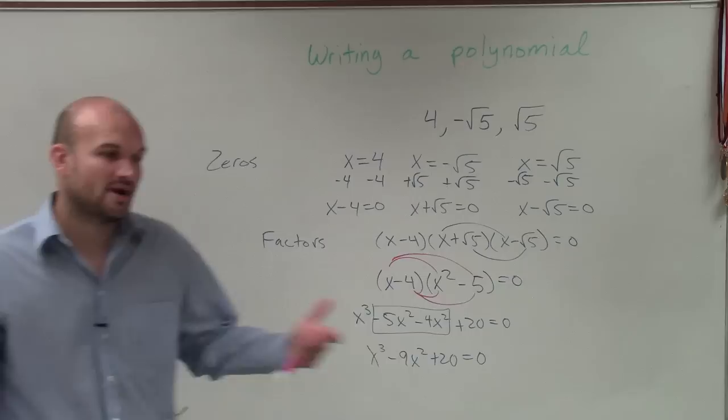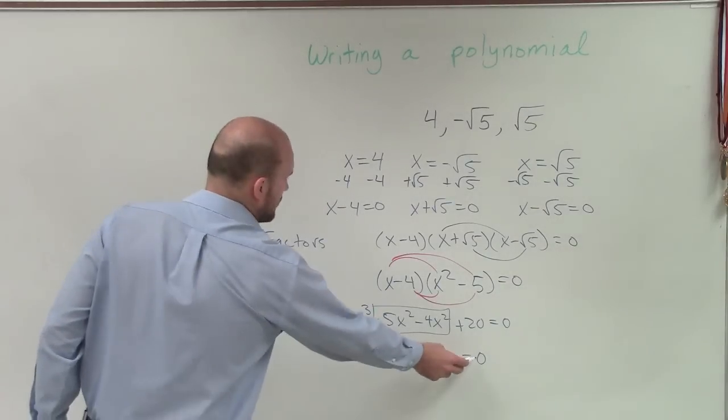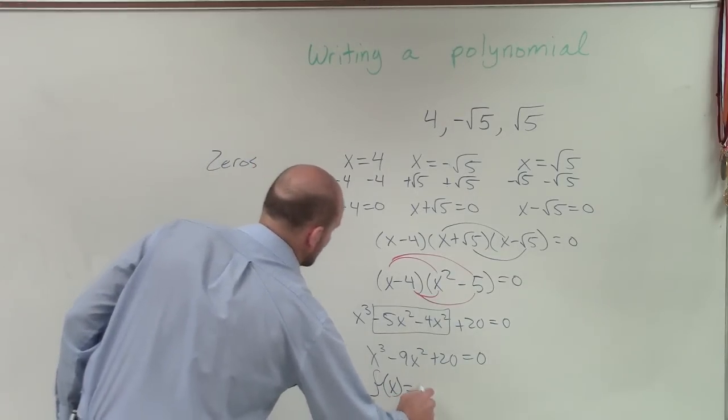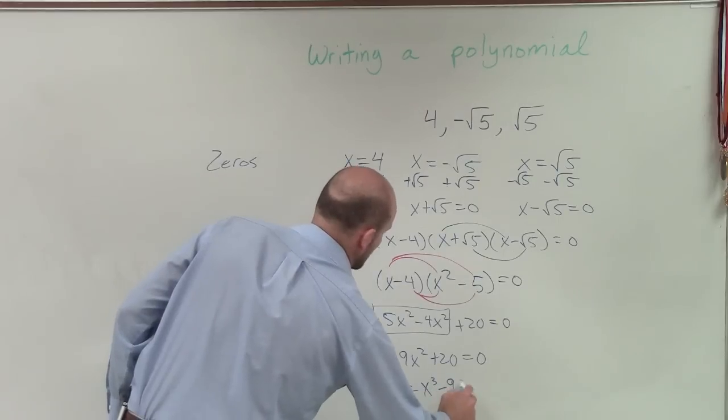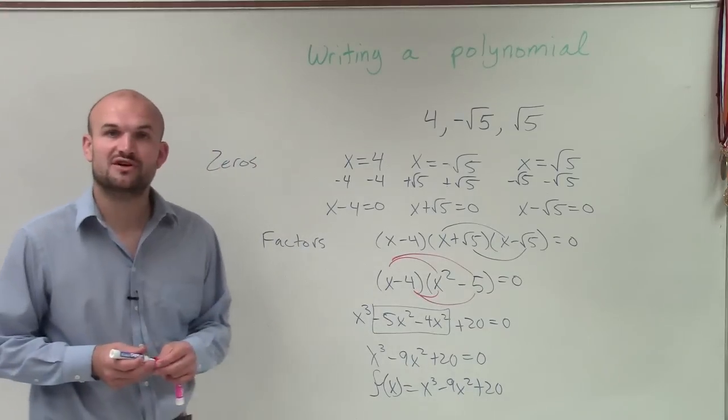However, ladies and gentlemen, we're not trying to write our polynomial equal to 0. We want to find it, write it as a function. So we only set it equal to 0 to find the zeros. So I'll say f of x equals x cubed minus 9x squared plus 20 as our final polynomial function. Thanks.